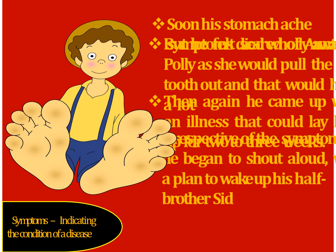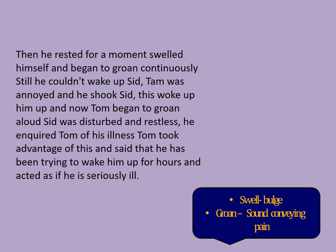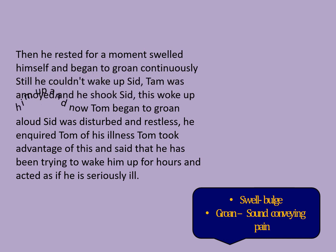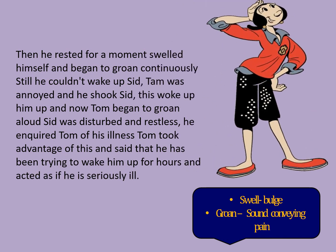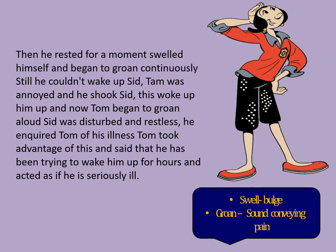Then again he came up with an illness that could lay him up for two or three weeks. Irrespective of the symptoms, he began to shout aloud with the plan to wake up his half-brother Sid. Symptoms means indicating conditions of a disease. Tom began to shout aloud, then rested for a moment, and began to groan continuously. Still he couldn't wake up Sid. Tom was annoyed and he shook Sid, which woke him up. Now Tom began to groan aloud, and Sid was disturbed and restless and inquired about Tom's illness.